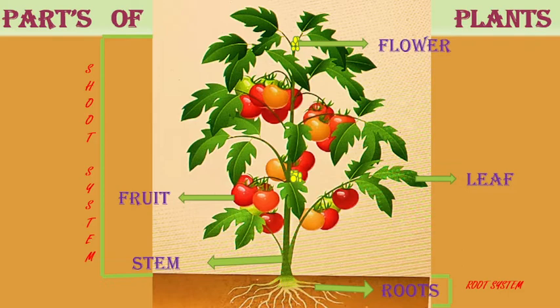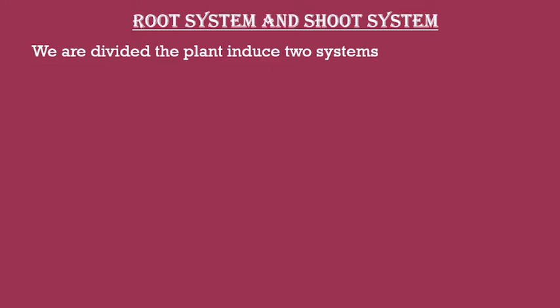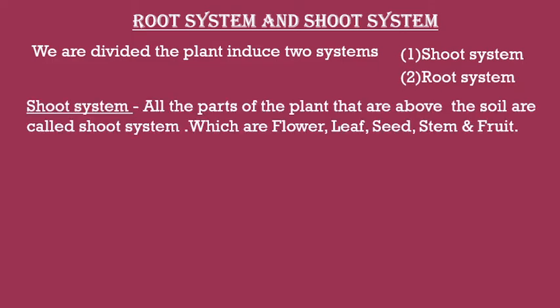Shoot system and root system. Now we are going to learn what is shoot system and what is root system. Shoot system ko hum prarog pranali kehte hain aur root system ko hum jad pranali kehte hain. What is shoot system? All the parts of the plant that are above the soil are called shoot system, which are flower, leaf, seed, stem, and fruit.